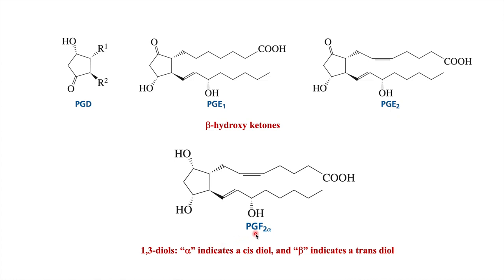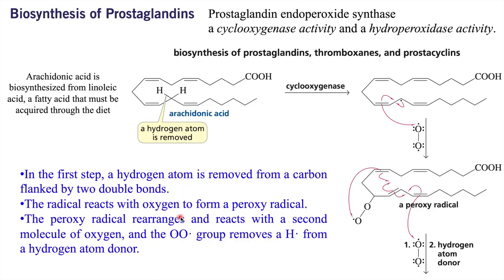PGF2 alpha contains a 1,3-diol. The subscript 2 represents two double bonds, and alpha represents these two hydroxyl groups being in cis conformation. If they are trans, then alpha becomes beta. So alpha and beta represent the cis and trans positions of these two hydroxyl groups.